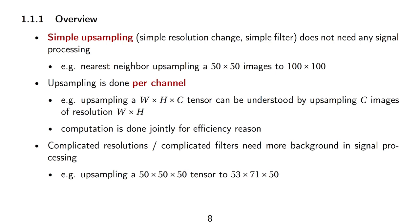So, if we want to take a width times height times c, where c is the number of channels tensor as input, then this upsampling can be understood as upsampling c separate images of resolution width times height, where each of the images is a grayscale image or each of the images represents a function that outputs a single value.